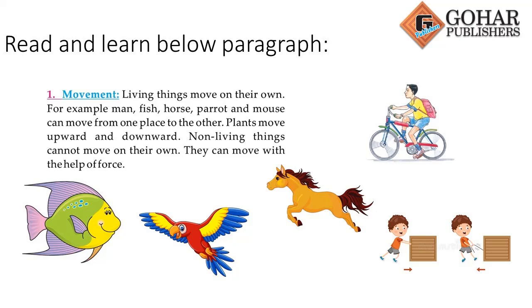جو جاندار چیزیں ہوتی ہیں وہ اپنی مرضی سے موو کر سکتی ہیں۔ جیسے کہ انسان ہیں، مچھلیاں ہیں، گھوڑے ہیں، توتا ہے، چوہا ہے۔ یہ سب اپنی مرضی سے موو کر سکتے ہیں اور ایک جگہ سے دوسری جگہ جا سکتے ہیں۔